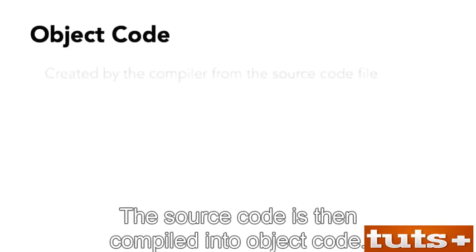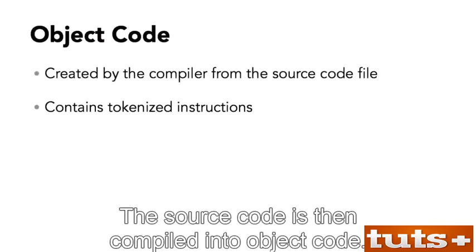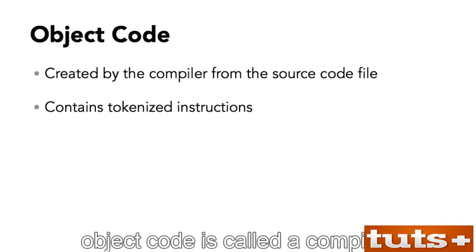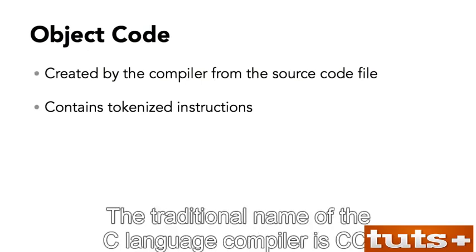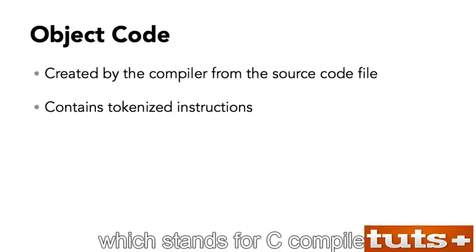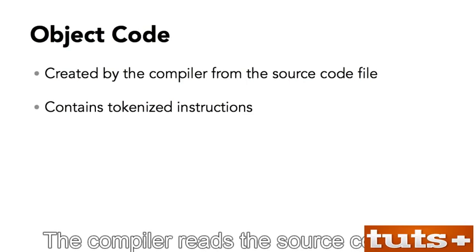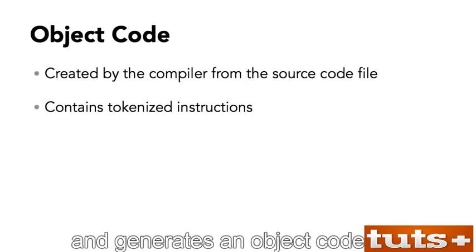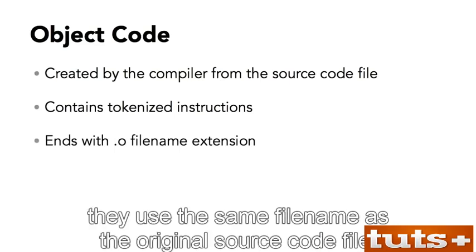The source code is then compiled into object code. The program that creates the object code is called a compiler. The traditional name of the C language compiler is CC, which stands for C compiler. The compiler reads the source code file and generates an object code file. Object code files have a .o file name extension, and they use the same file name as the original source code file.